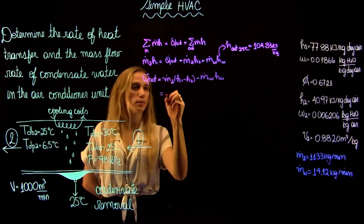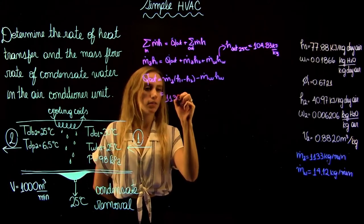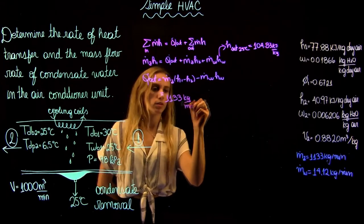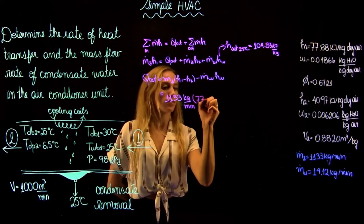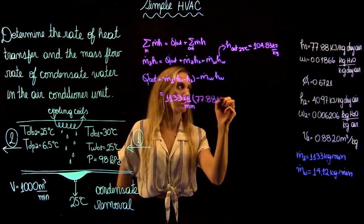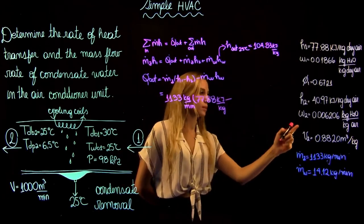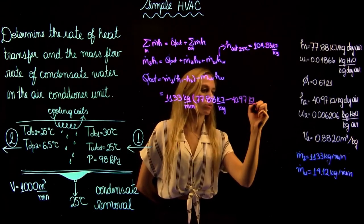We found before the mass flow rate of dry air is 1133 kilograms per minute. Enthalpy at 1 is 77.88 kilojoules per kilogram minus enthalpy 2, 40.97 kilojoules per kilogram.